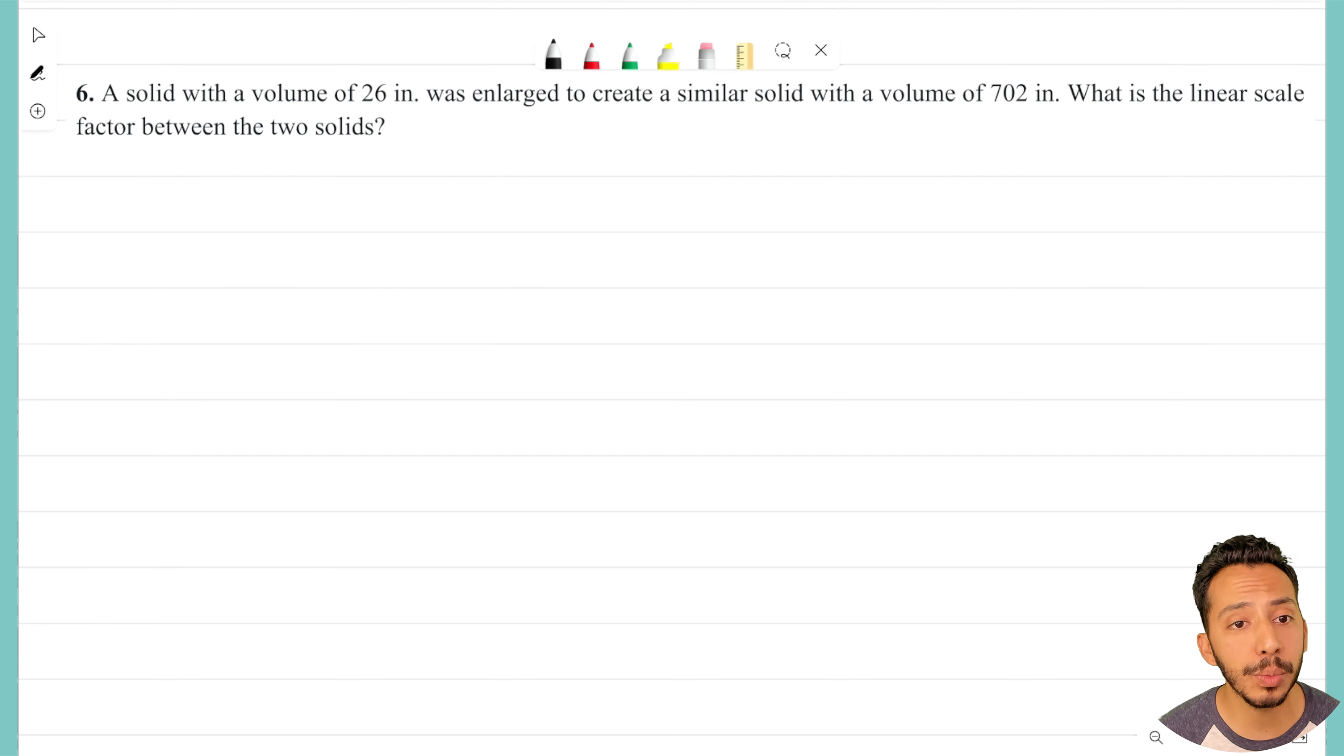It says a solid with a volume of 26 inches, probably should have a cubed up there, it's a little typo. Was enlarged to create a similar solid with a volume of 702 inches cubed. What is the linear scale factor between the two solids?